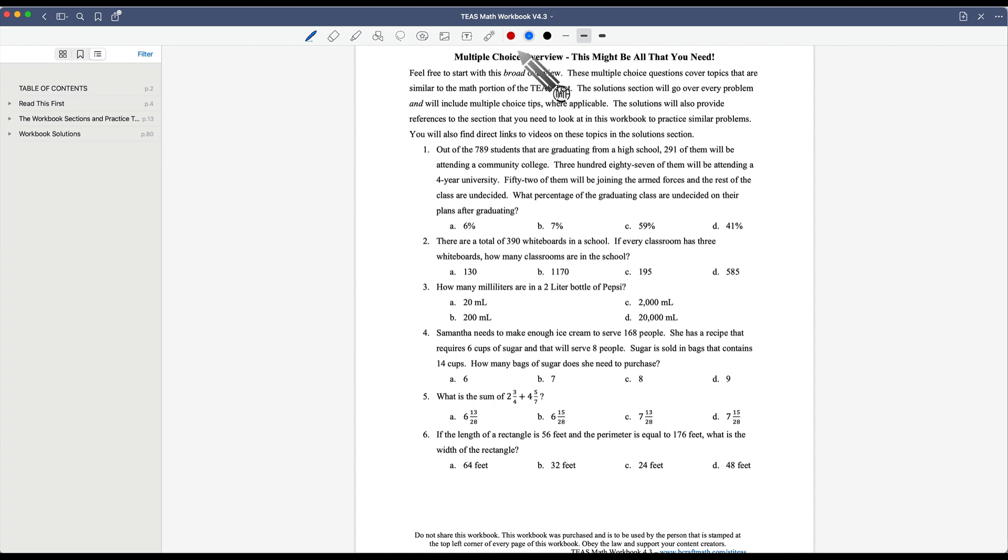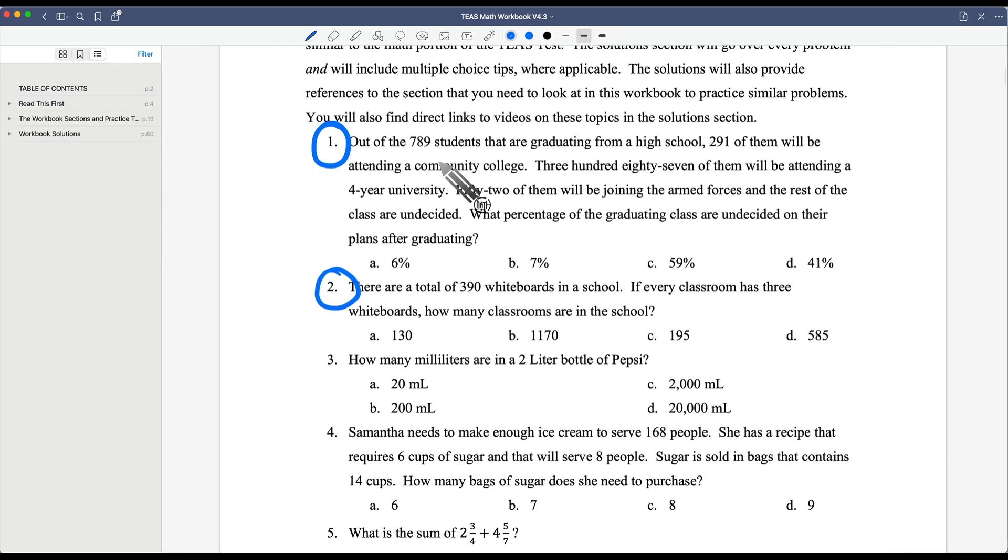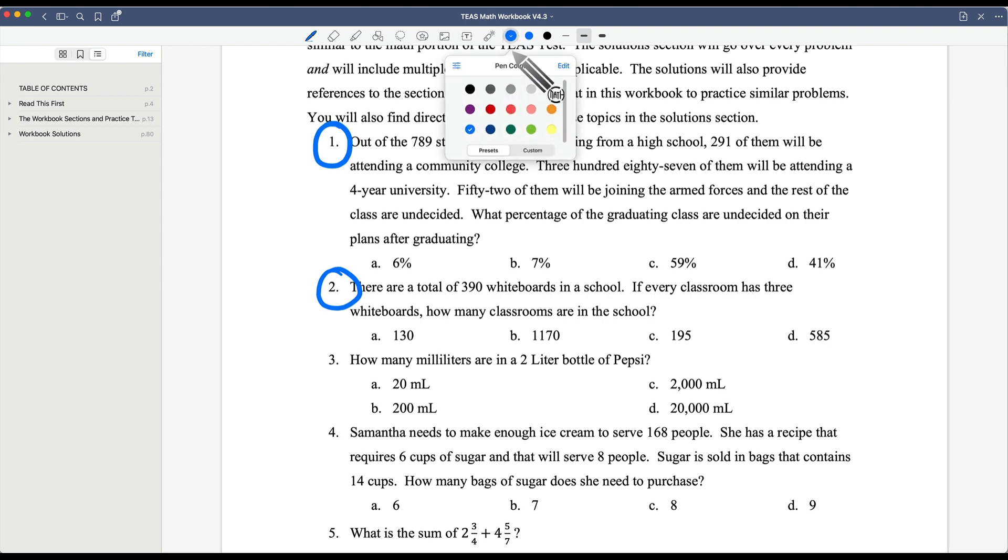You can select different pen sizes, you can do drop downs with different colors, and really what it boils down to is you being able to write right inside of the workbook. You can even zoom in on the workbook if you want to get real close to a problem. You can work the entire problems out or you can make quick notes like down here a two liter bottle of Pepsi.